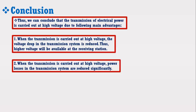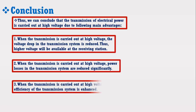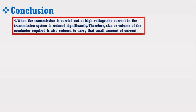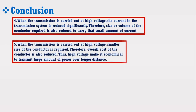Advantage number 3: when transmission is carried out at high voltage, efficiency of the transmission system is enhanced. Advantage number 4: when transmission is carried out at high voltage, the current in the transmission system is reduced significantly. Therefore, the size or volume of the conductor required is also reduced to carry that small amount of current. Advantage number 5: when transmission is carried out at high voltage, a smaller size of conductor is required, therefore the overall cost of the conductor is also reduced.